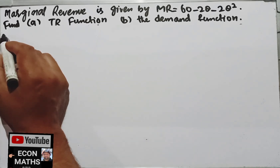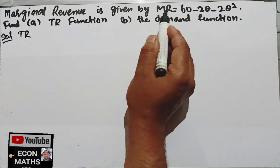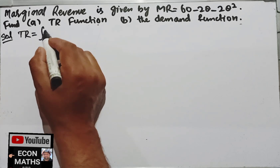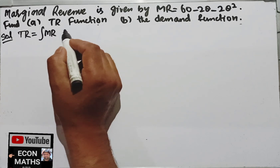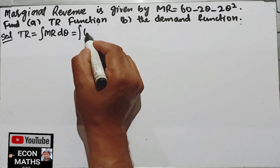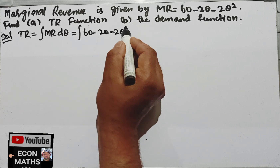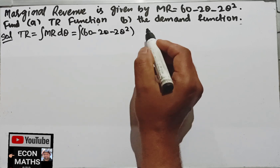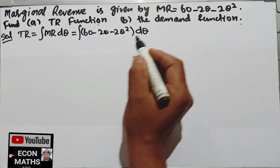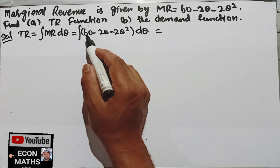To find the total revenue function, we will integrate the marginal revenue function with respect to quantity. So we will integrate marginal revenue with respect to quantity, that is dQ. This will become the integral of 60 minus 2Q minus 2Q squared with respect to dQ.